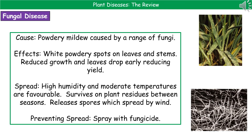The last type of plant disease we need to look at is a fungal disease, and the one we're going to use as our example is powdery mildew. This can be caused by a range of fungi depending on which plant we're talking about — for example, barley powdery mildew. The effects are white powdery spots on the leaves and the stems, as you can see in the top right picture. We also see reduced growth and the leaves drop early, so we get a reduced yield as a result.